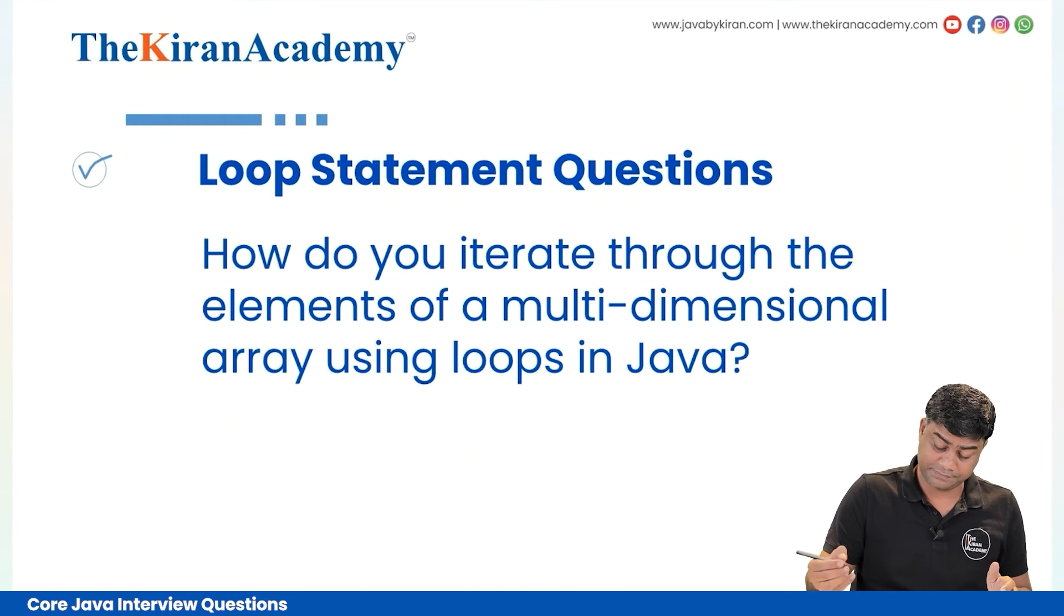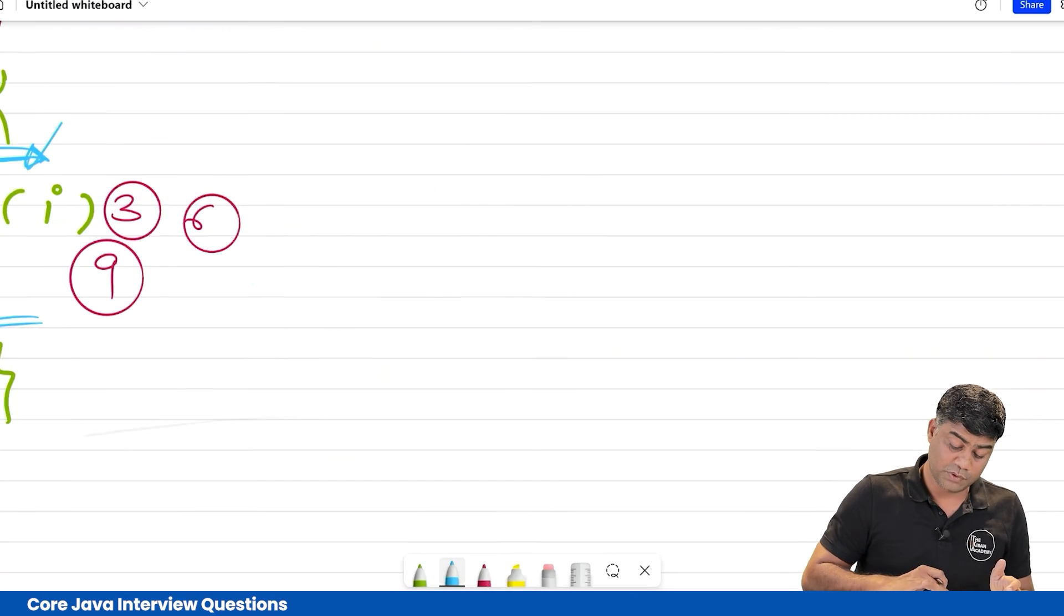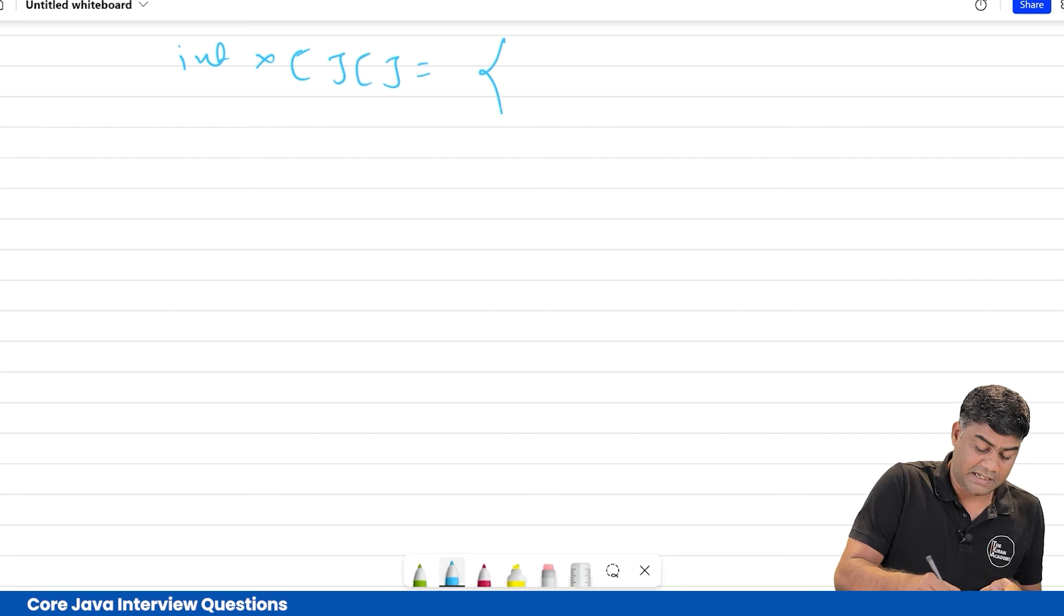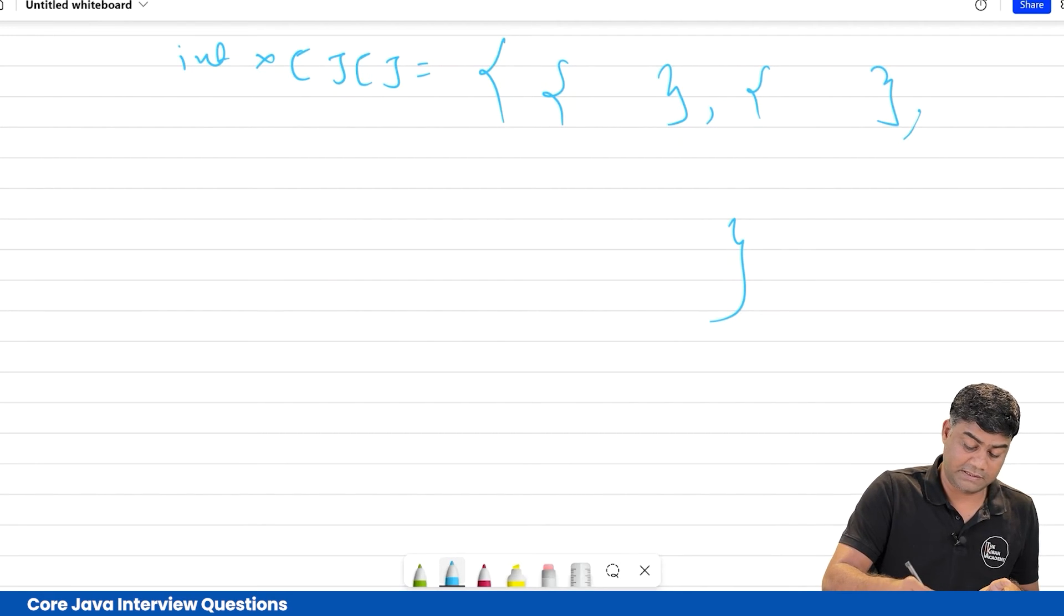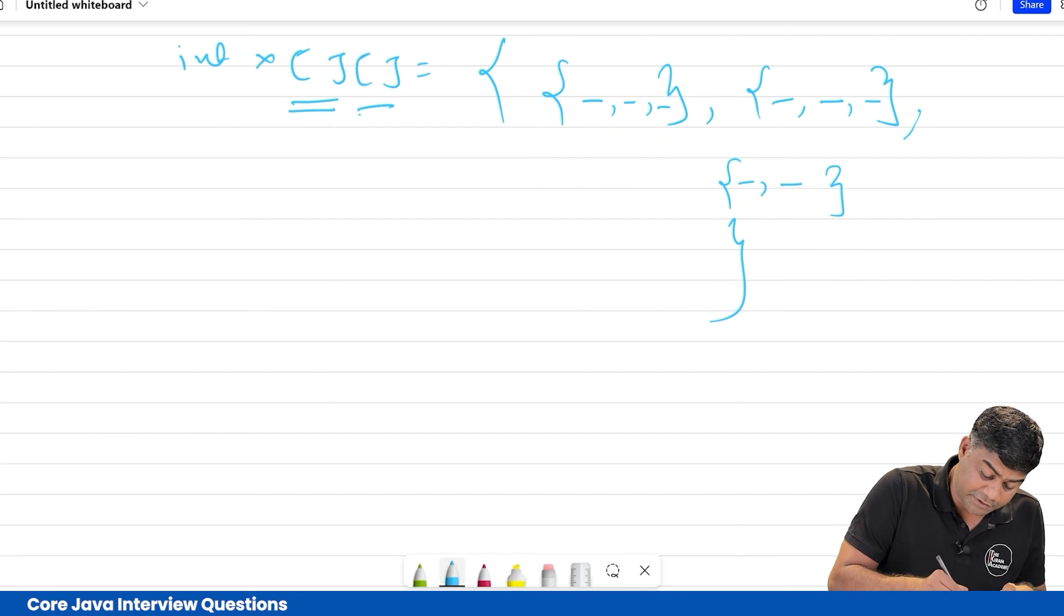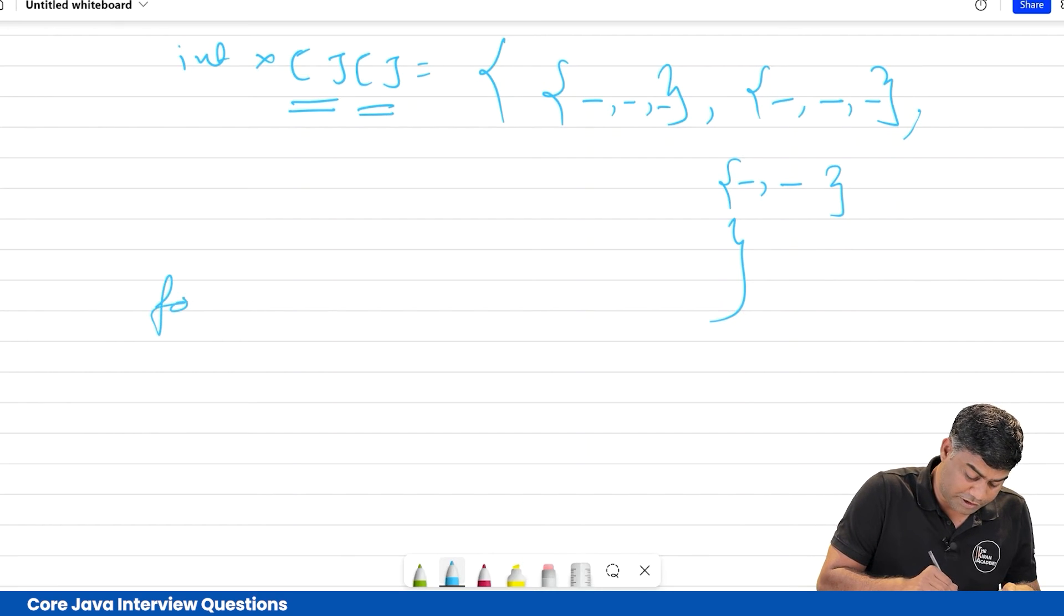Multi-dimensional means it will be like this: print x, and then something like this, comma something like this. Some elements will be there, some elements will be there. This is multi-dimensional array. Now how to iterate it? First iterate over this, then iterate over this. So two for conditions will be there.